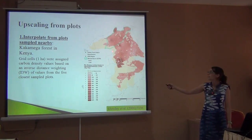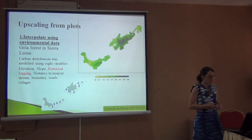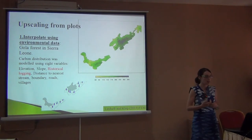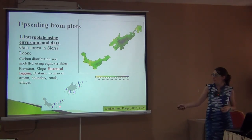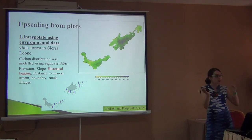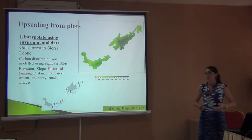Of course we don't know what's happening in areas where we don't have plots, so the accuracy can be questionable. A step further is to look at other variables that might explain differences in biomass — maybe elevation, slope, distance to roads. This is the example from Sierra Leone where they considered historical logging. They built a linear model using different correlations, how each variable explains the biomass in measured plots, and then predicted in unmeasured places.